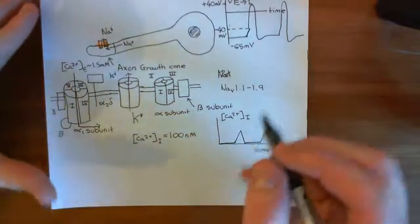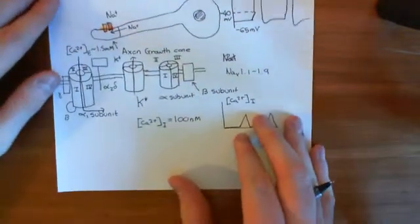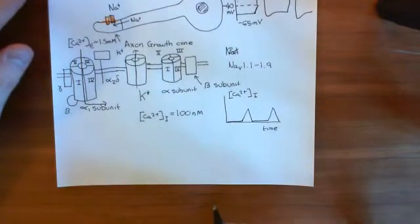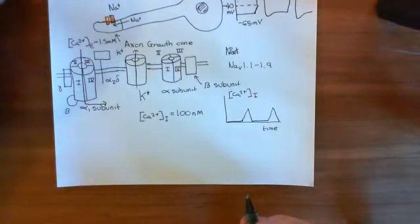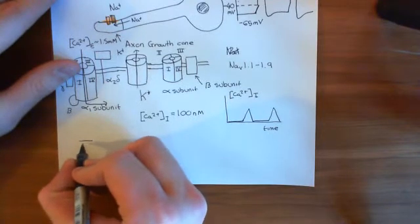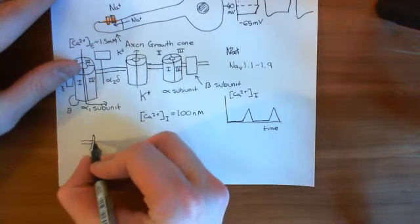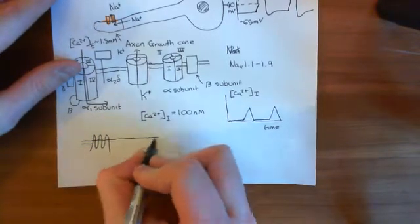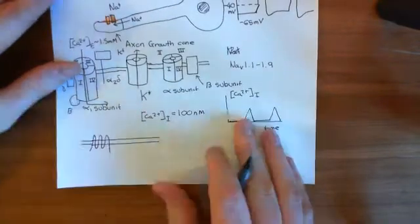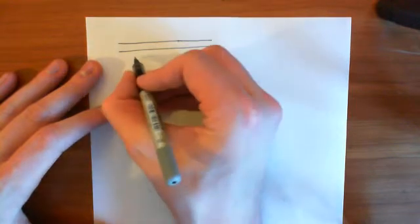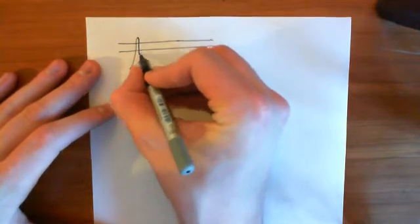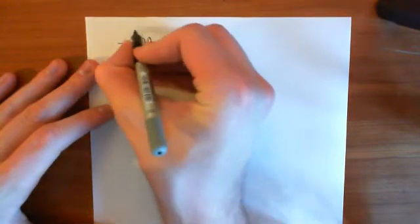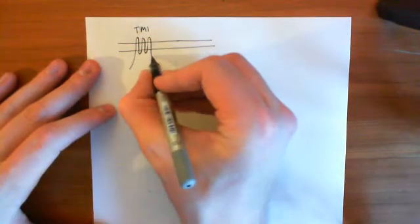There's another structure in the cell membrane which is adenylyl cyclase 1. Let me draw adenylyl cyclase 1 in the membrane. Here is the cell membrane of this axon growth cone, and here we have adenylyl cyclase 1. It has transmembrane domain 1, which consists of six membrane-spanning alpha helices, and the C1 loop connecting transmembrane domain 1 to transmembrane domain 2.